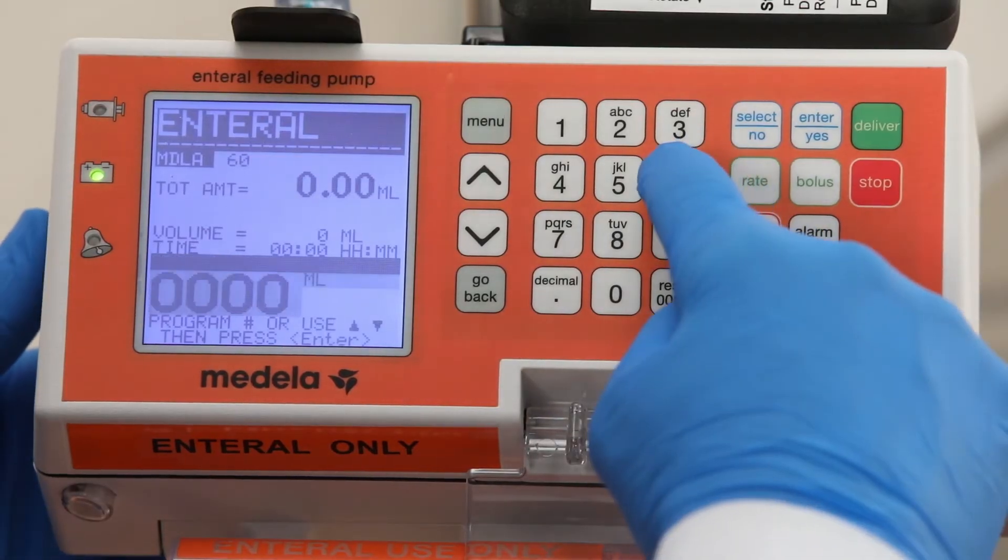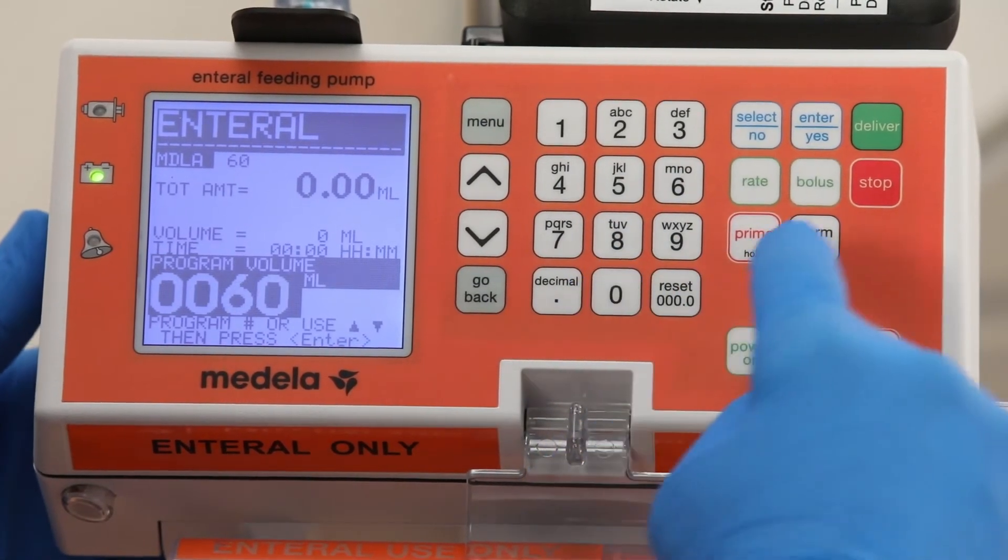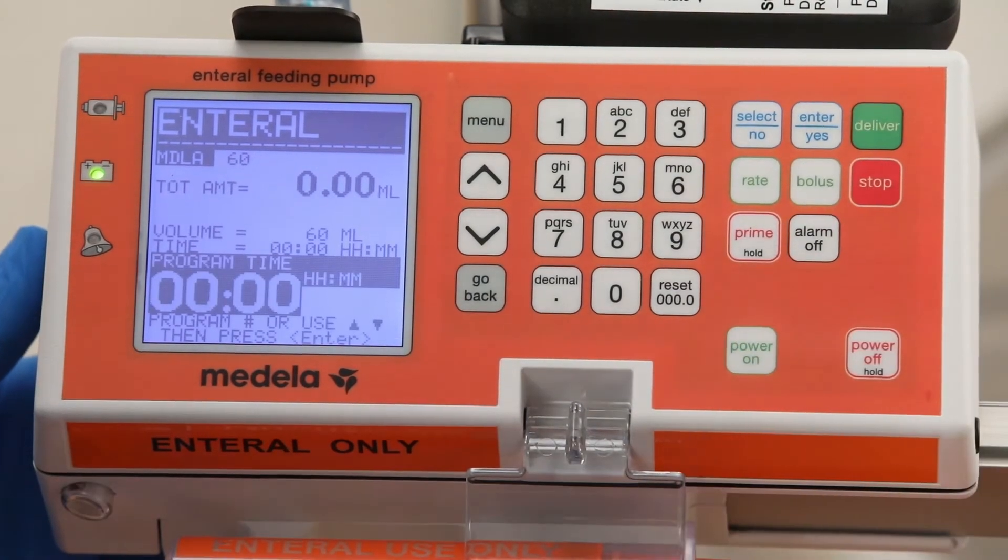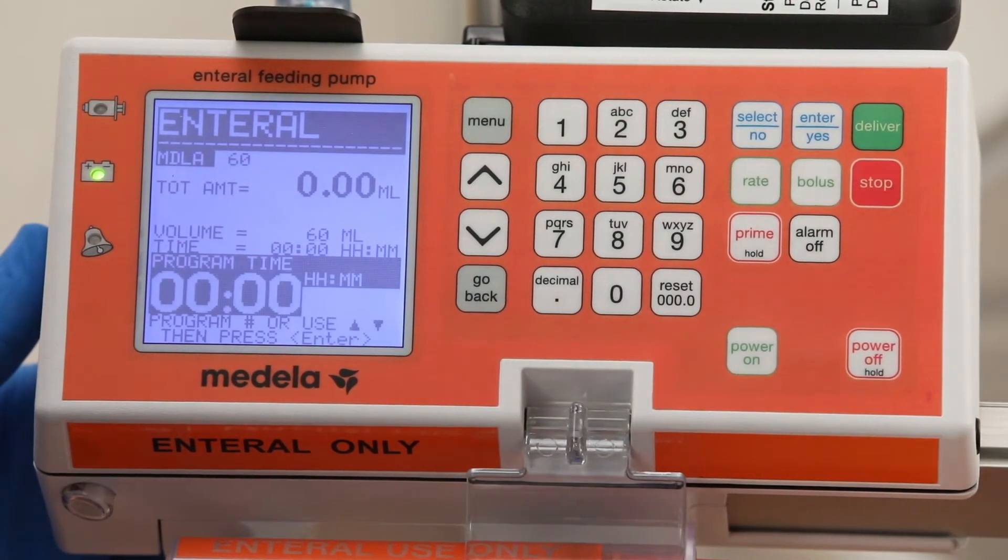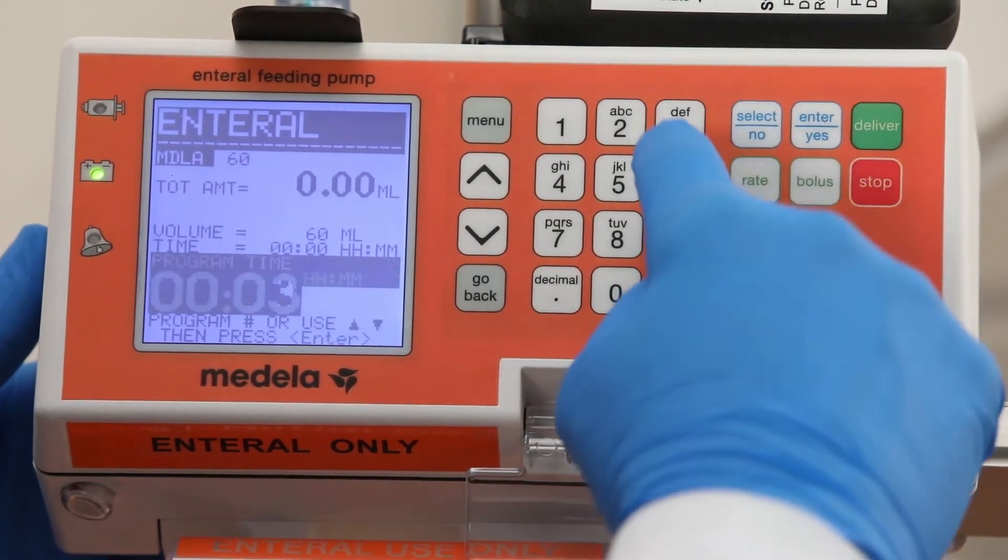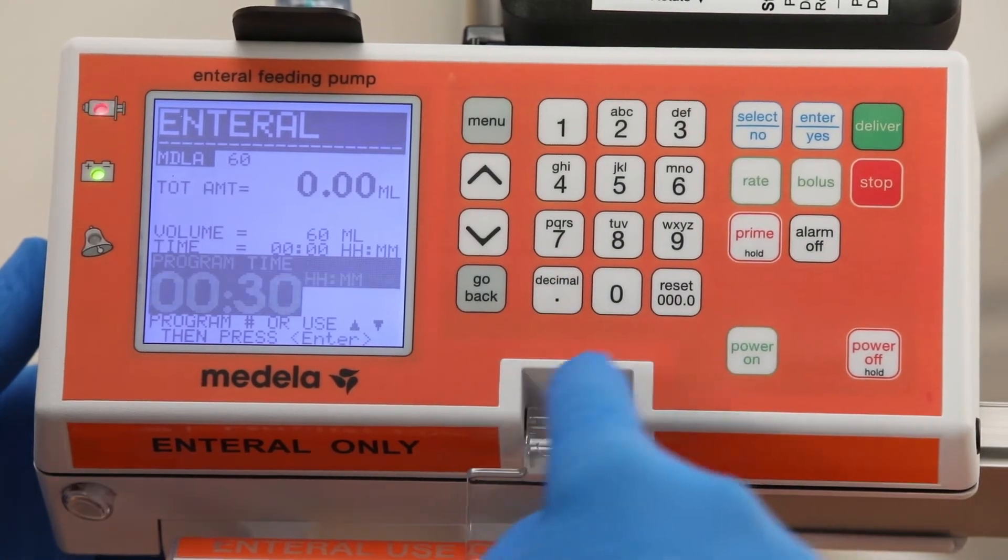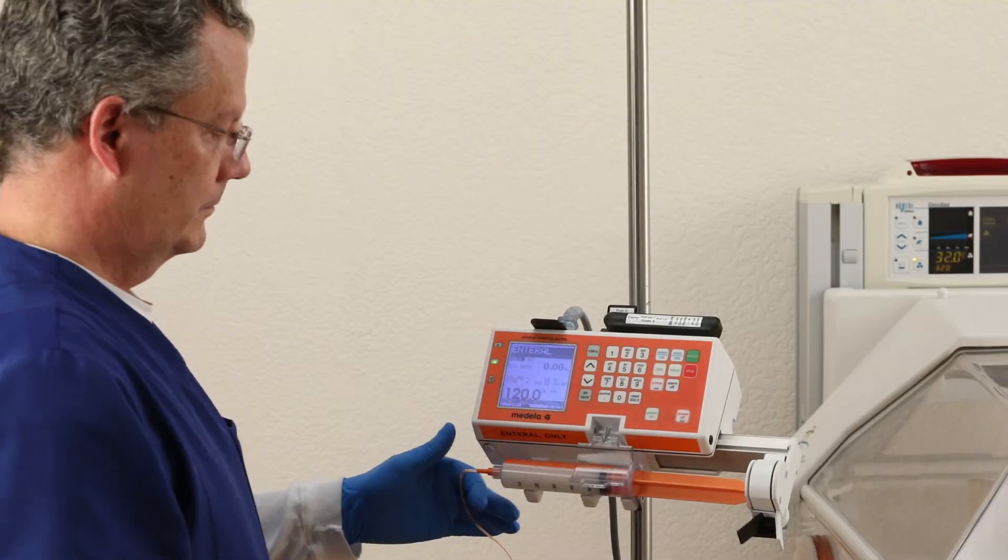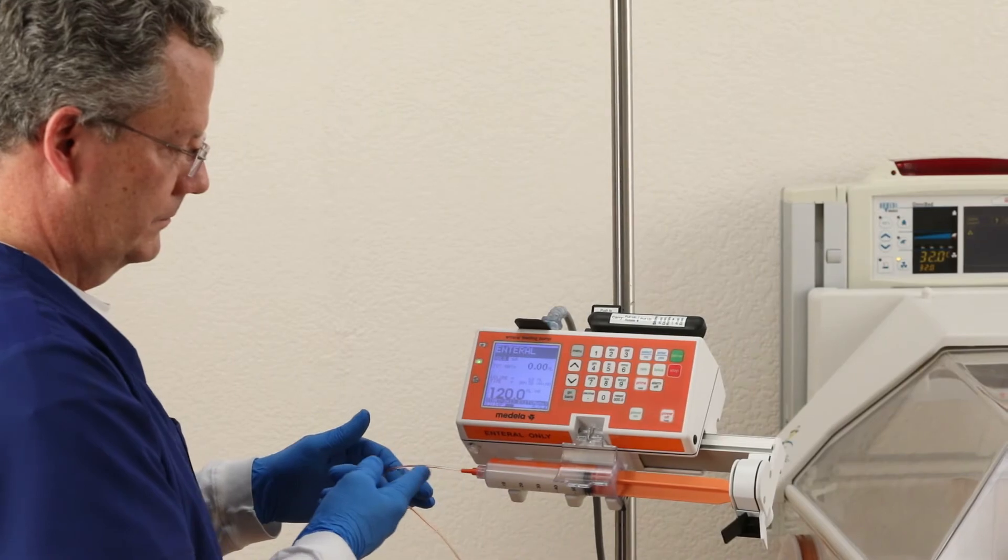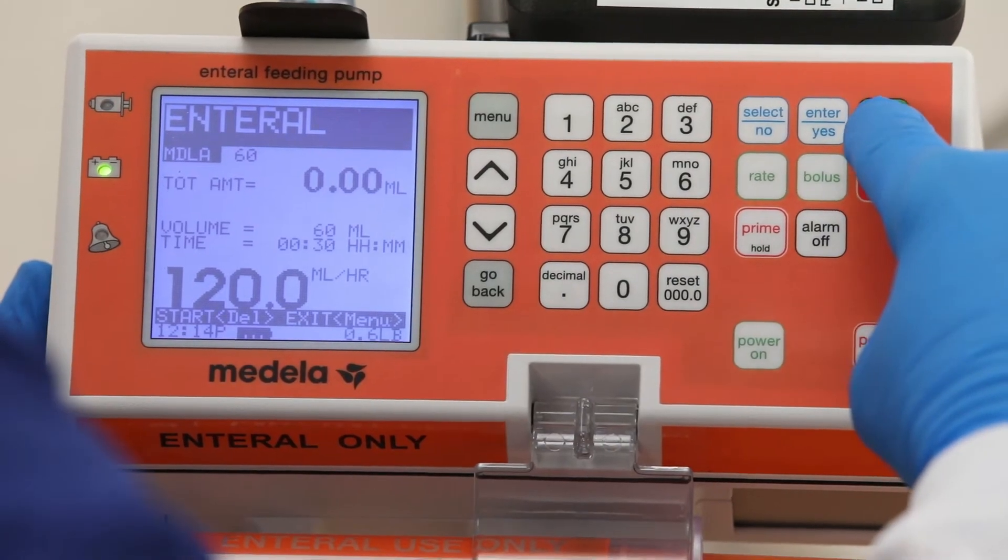Use the number keys to program the volume amount to infuse and press the enter/yes key. Use the number keys to program feed delivery time in minutes or hours in minutes and press the enter/yes key. Trace the tubing to the patient to confirm proper connection. Then press deliver to start delivery.